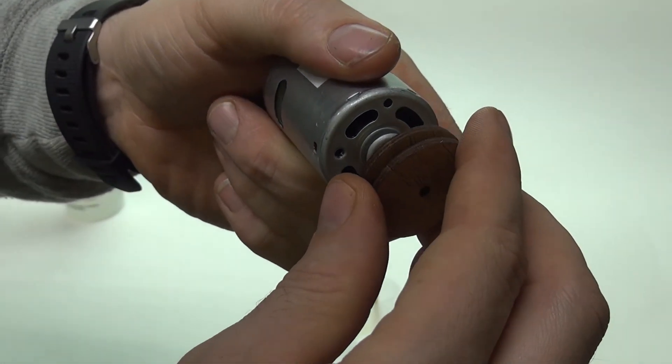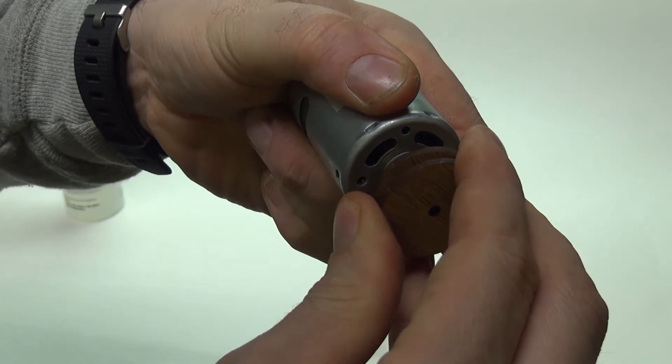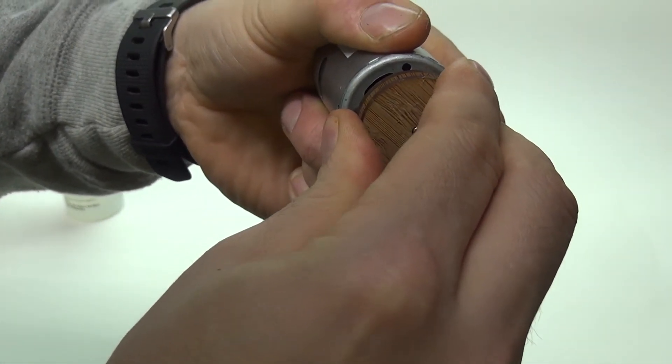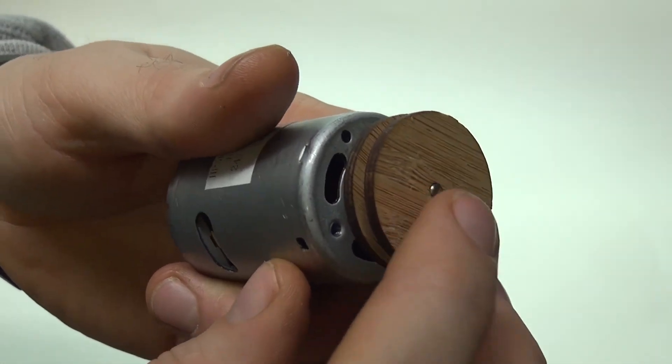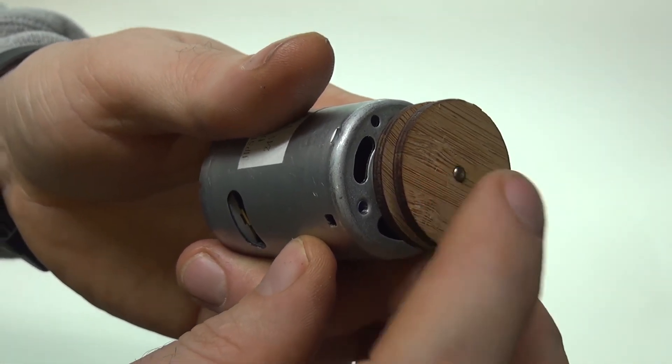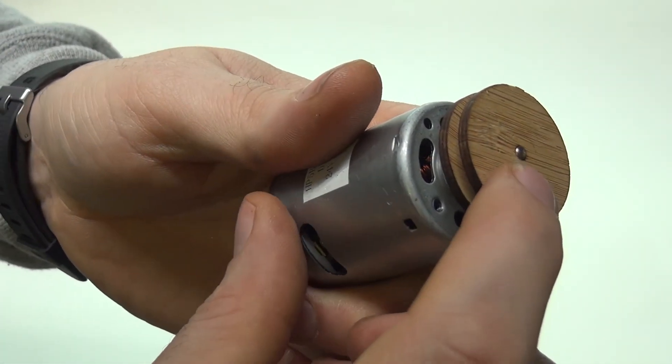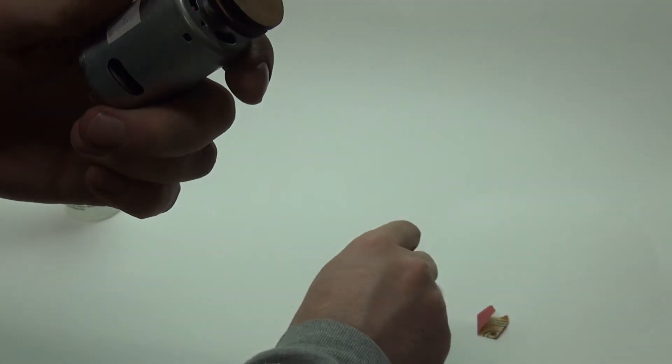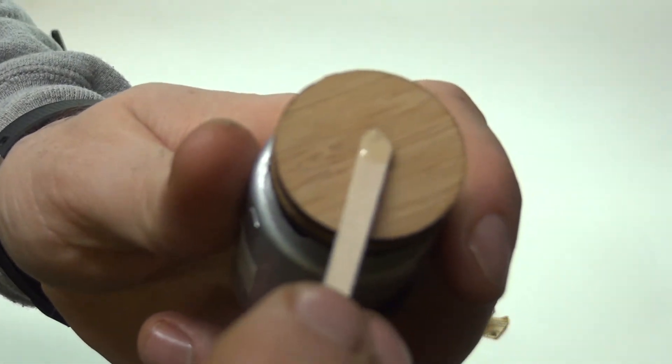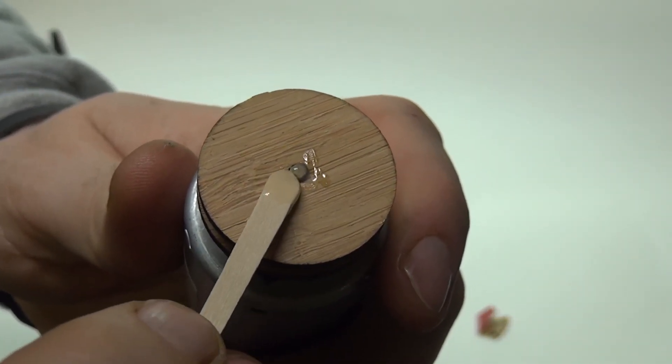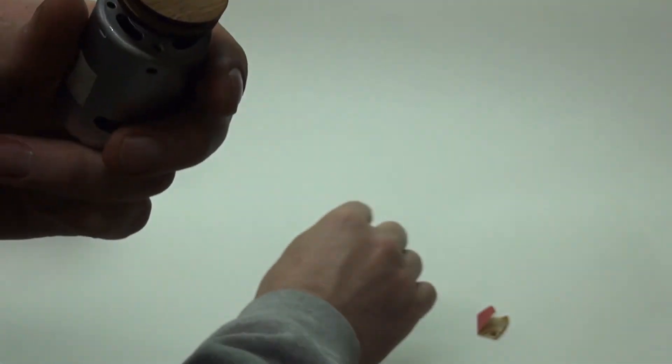Then you want to slide it on, and you want to get the wooden pulley flush with the end of the motor shaft. You can put a little dab of epoxy at the end and sort of coat it like that.